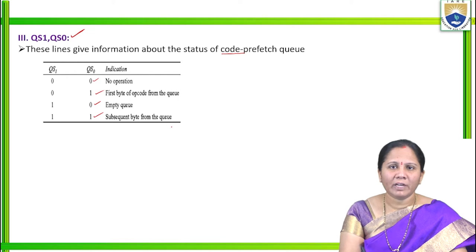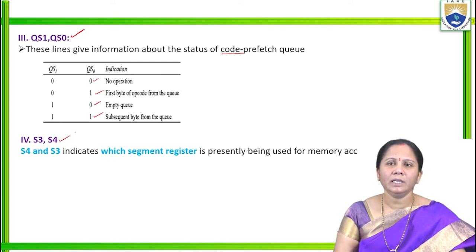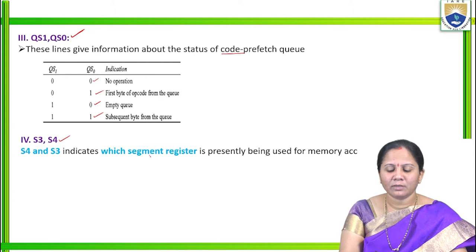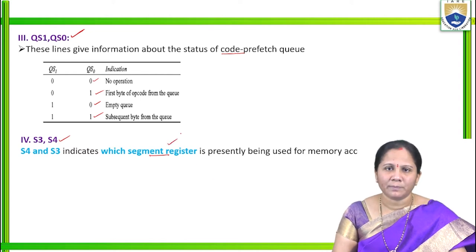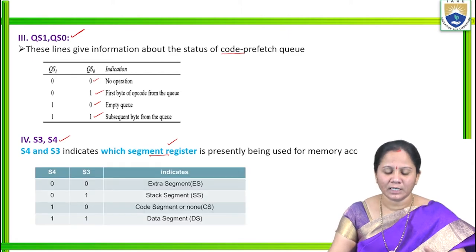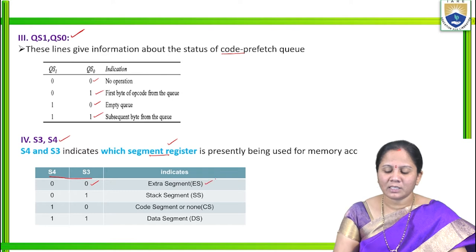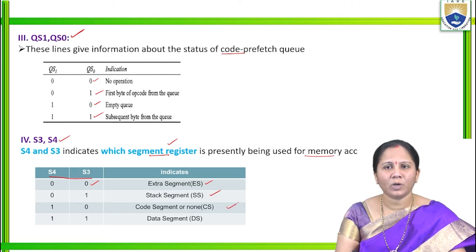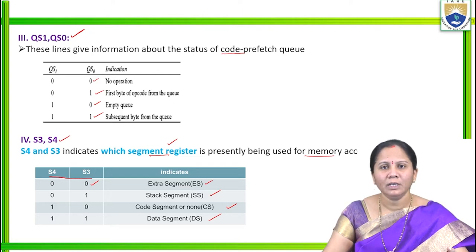S3 and S4 are two status signals that indicate segment register selection — which segment is selected for memory access. If S3/S4 = 00, the extra segment is used; 01 = stack segment; 10 = code segment; 11 = data segment will be selected.